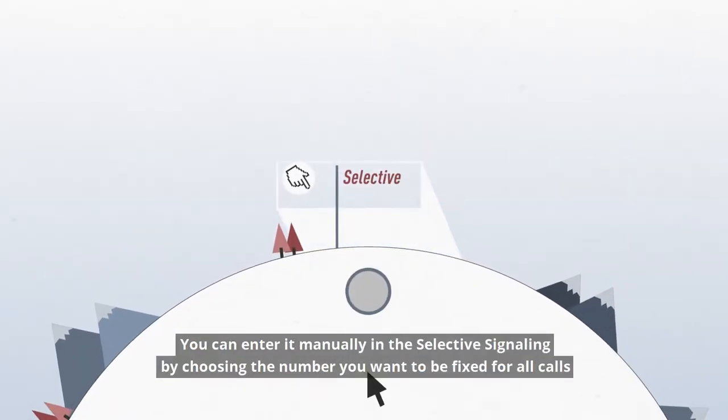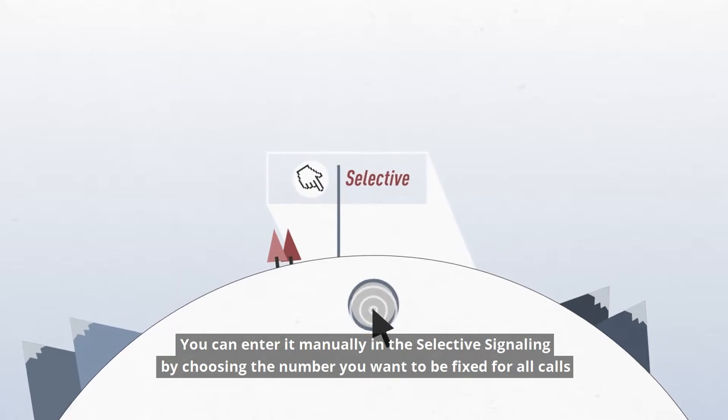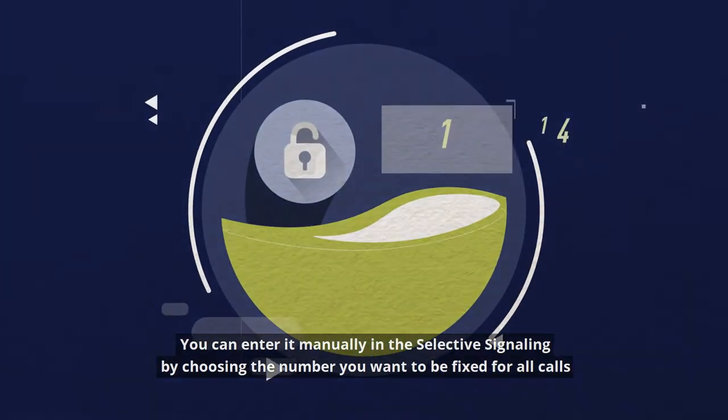You can enter it manually in the selective signaling by choosing the number you want to be fixed for all calls.